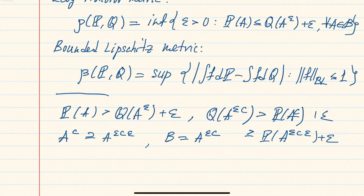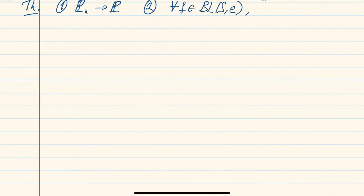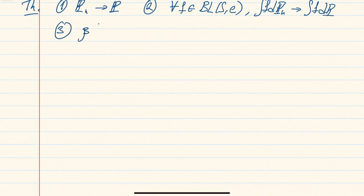Now we come to the main result of this section: that these two metrics define weak convergence of a sequence of probability measures when our metric space is separable. The main theorem states that the following four conditions are equivalent: (1) weak convergence of P_n to P; (2) for all bounded Lipschitz functions, convergence of the integrals; (3) convergence in the bounded Lipschitz metric; and (4) convergence in the Lévy-Prokhorov metric.